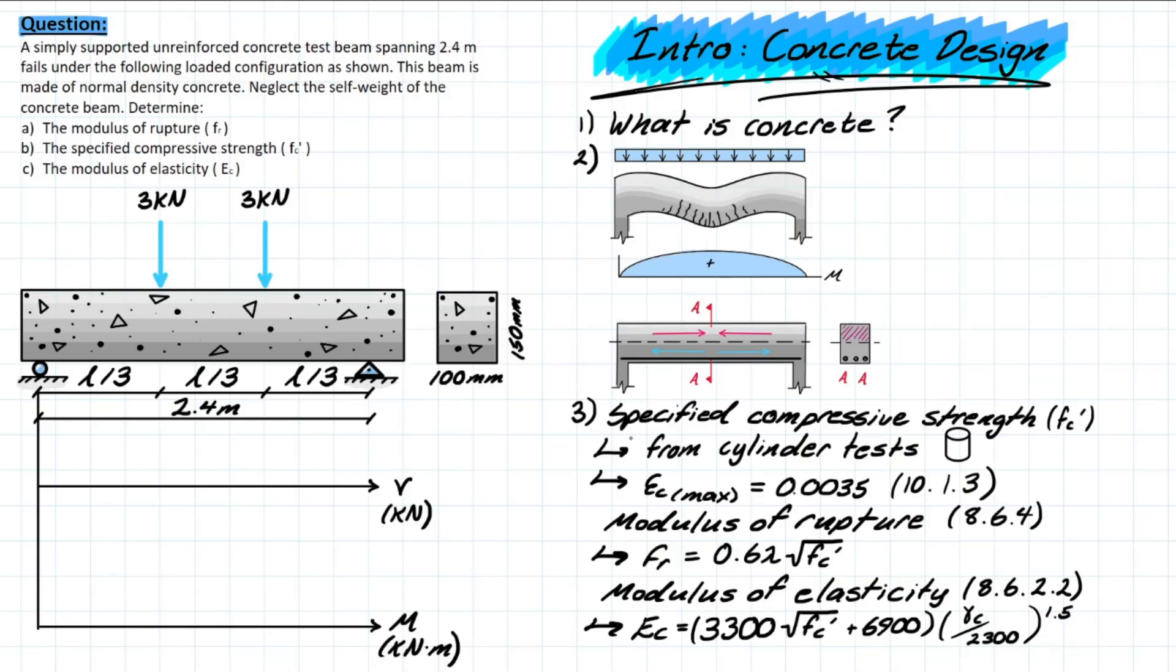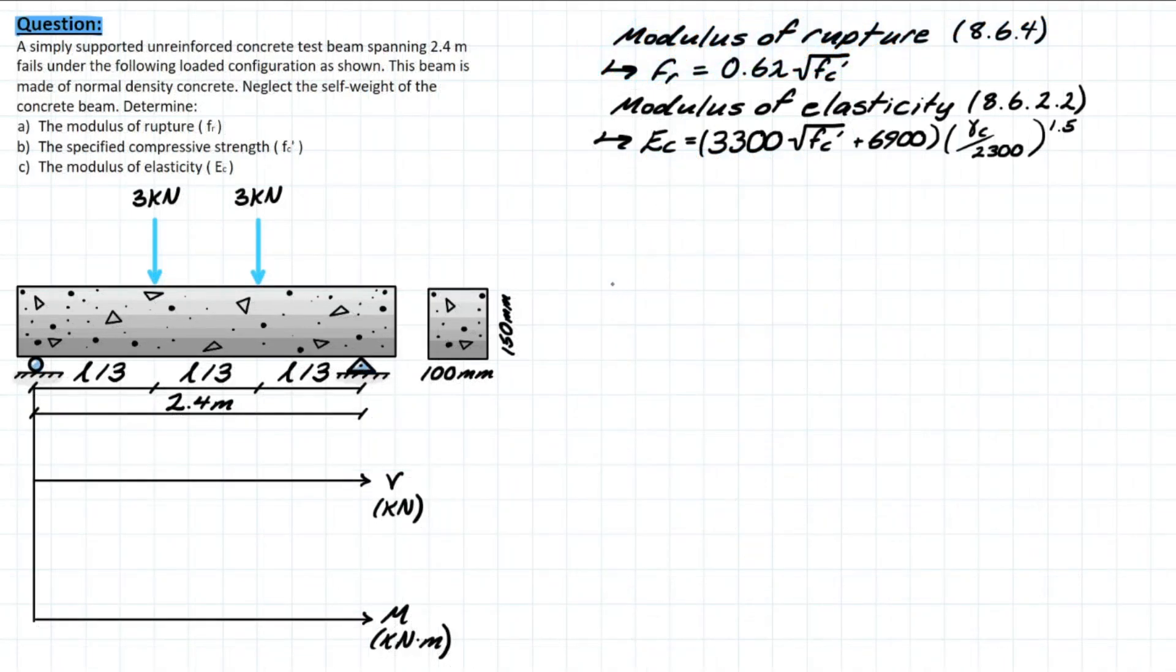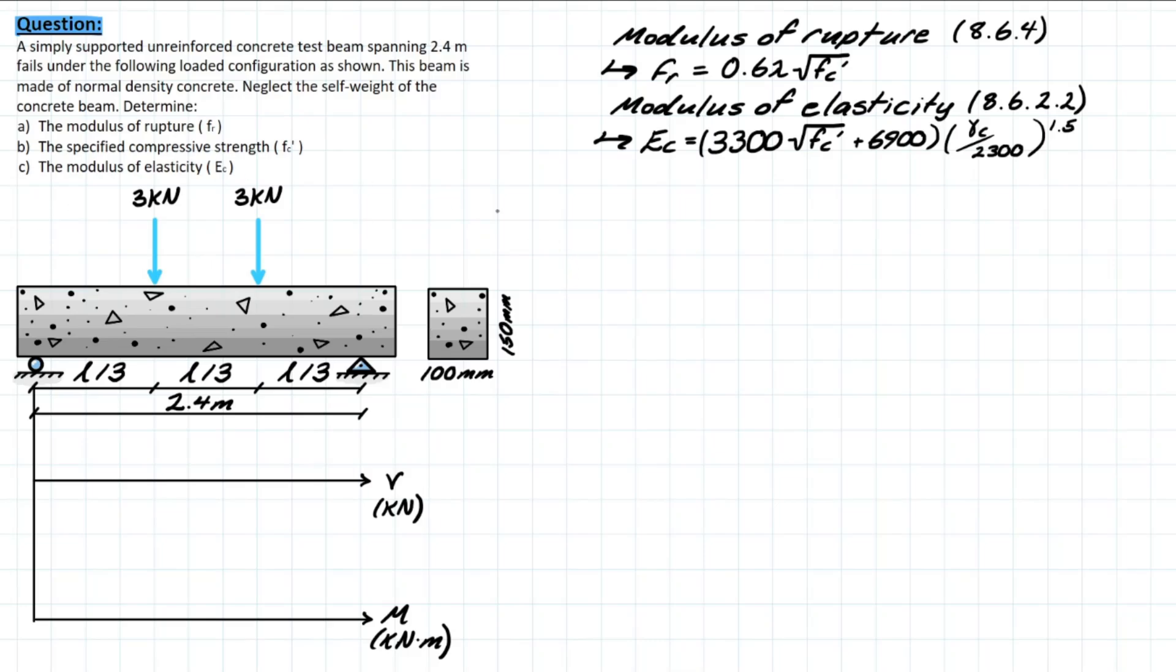Now that we've covered all these design parameters of our concrete mix, we can actually hop into a problem and see how these design parameters can be solved for. Now we've cleaned up the page, we can hop into the problem. It is asking us to look at a simply supported unreinforced concrete test beam that spans 2.4 meters and fails under the following load configuration. It says the beam is normal density concrete and to neglect the self-weight of the beam. It's asking us to find the modulus of rupture, the specified compressive strength, and the modulus of elasticity.